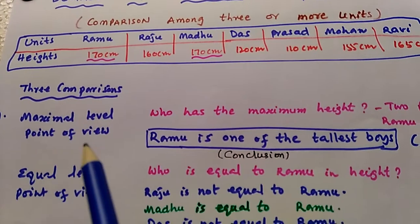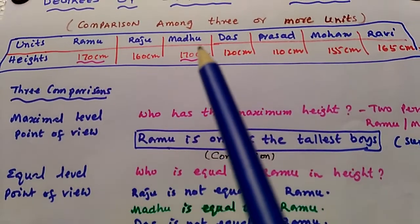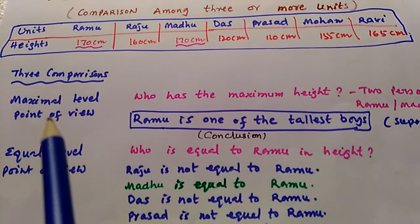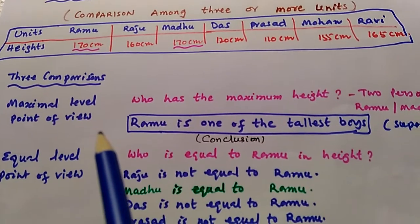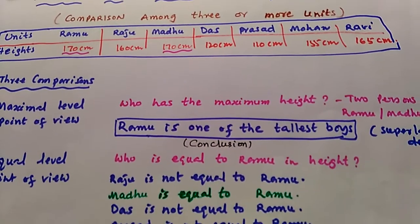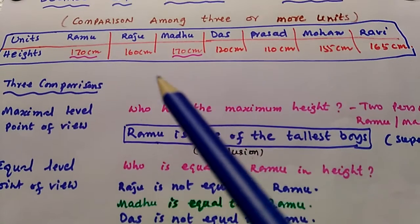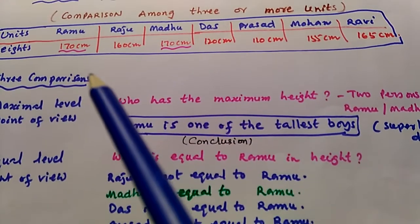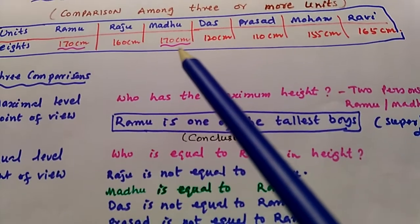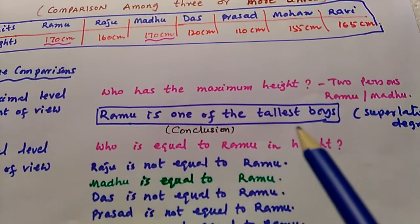When we compare from the maximum level point of view, we ask: who has the maximum height? Here, two persons have the maximum height — Ramu has 170 cm and Madhu also has 170 cm. So the conclusion sentence is: Ramu is one of the tallest boys.